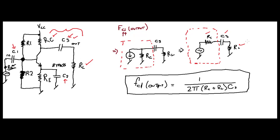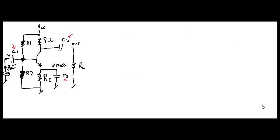That is your equation for the output critical frequency — pretty straightforward. Again, resistance R is in ohms, capacitance is in farads, and your result will be in hertz. Next, we're going to work on the bypass RC circuit to get the critical frequency. Let's look at the third and final circuit for this amplifier — the bypass RC circuit.